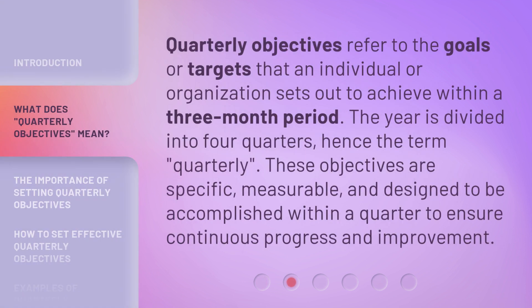Quarterly objectives refer to the goals or targets that an individual or organization sets out to achieve within a three-month period. The year is divided into four quarters, hence the term 'quarterly.' These objectives are specific, measurable, and designed to be accomplished within a quarter to ensure continuous progress and improvement.